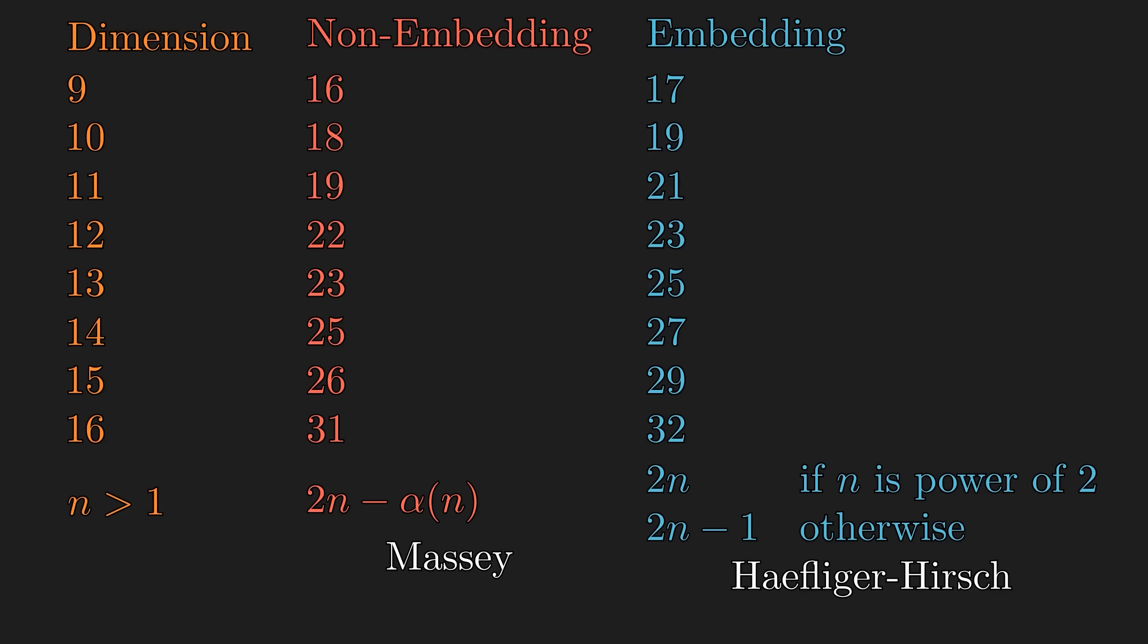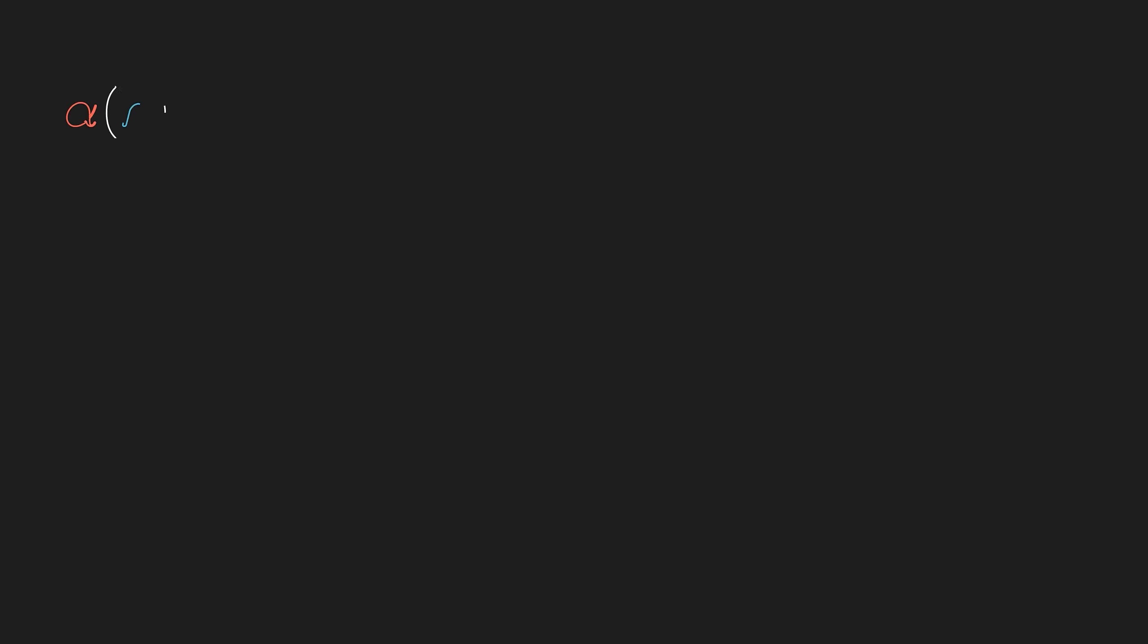Notice how the gaps between the non-embedding and the embedding dimensions are growing. An unproven conjecture is that the embedding dimension for all n-manifolds is actually just 1 above the non-embedding dimension. As per what alpha is, it is the number of 1s in the binary representation of the number.